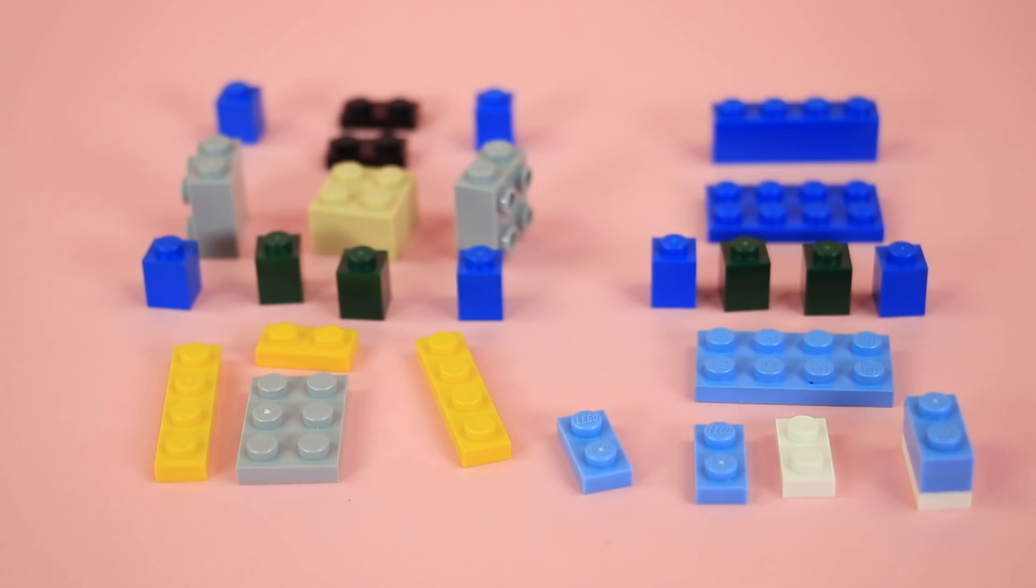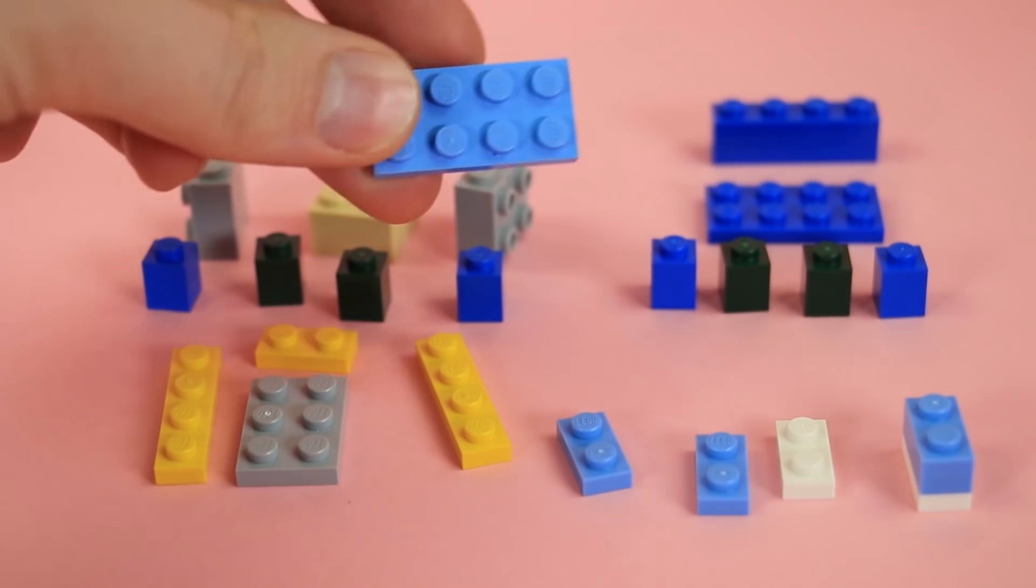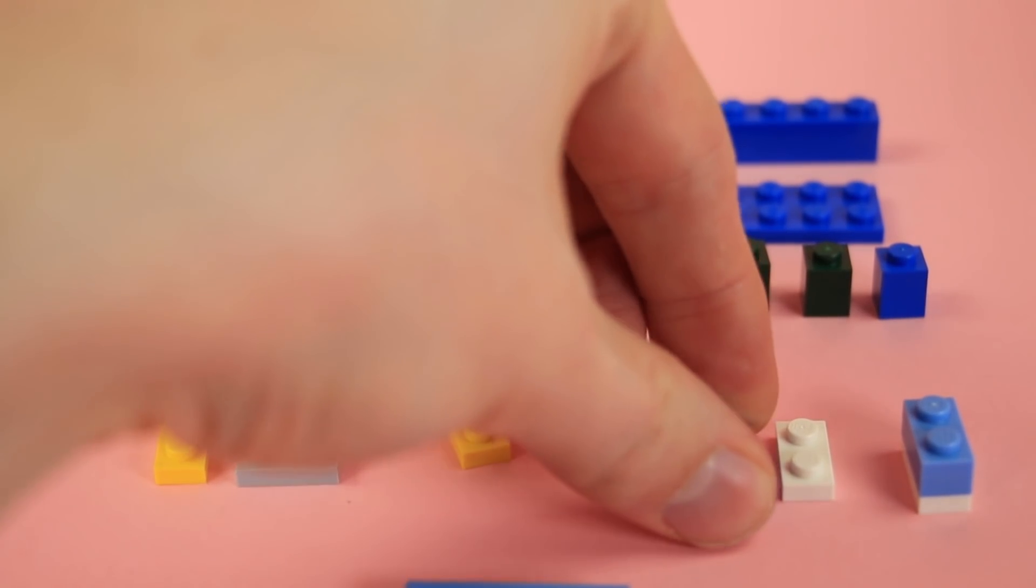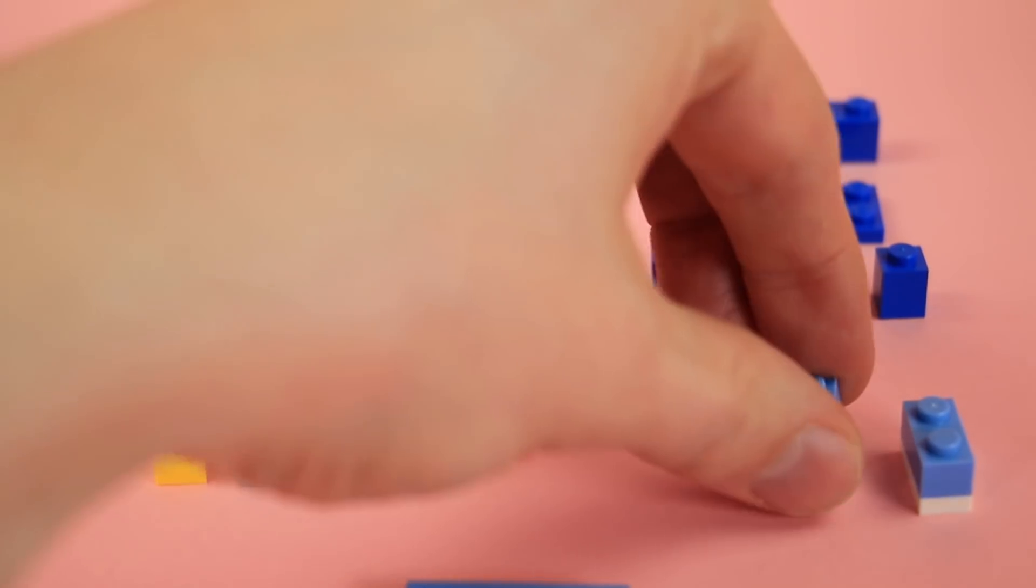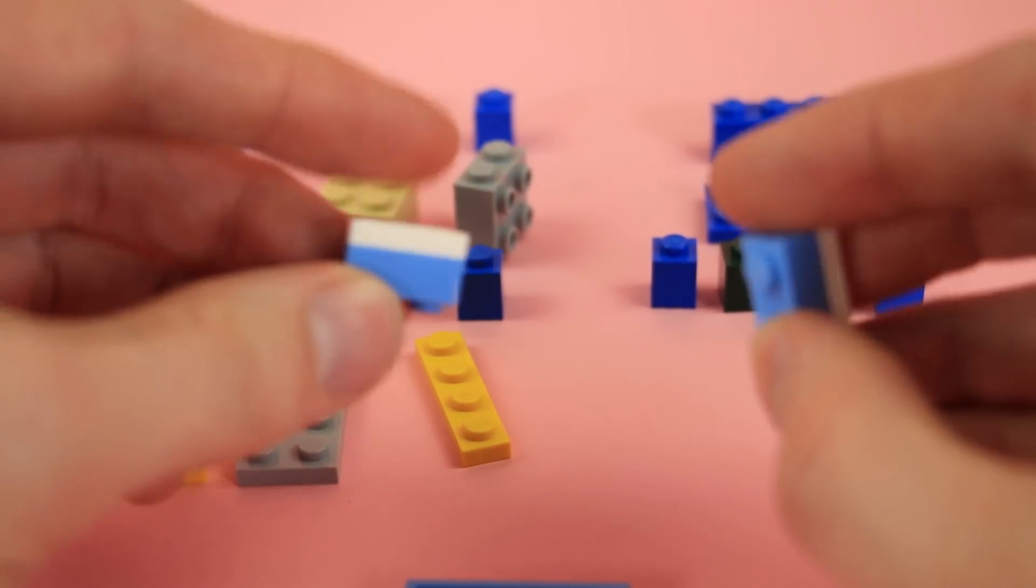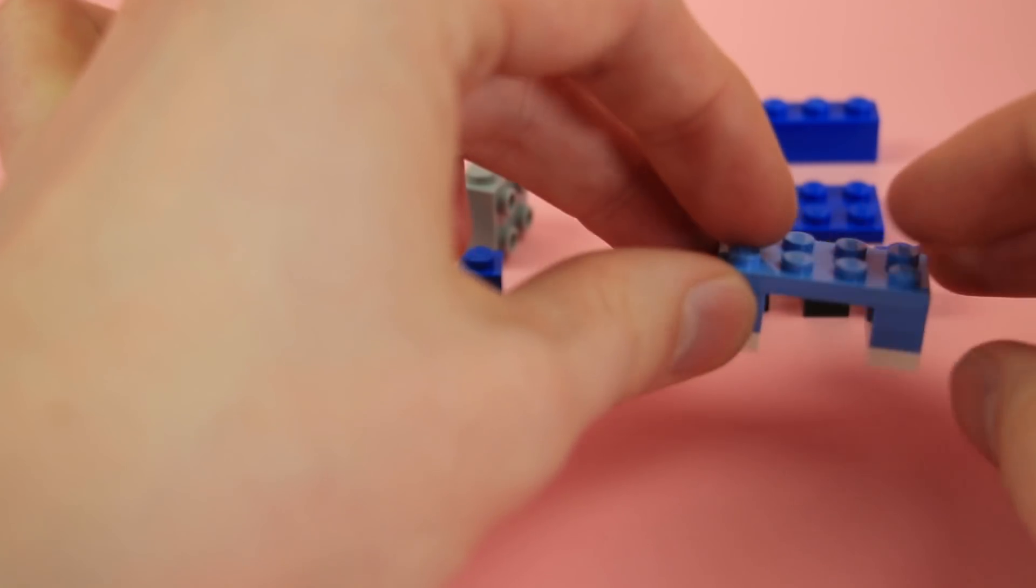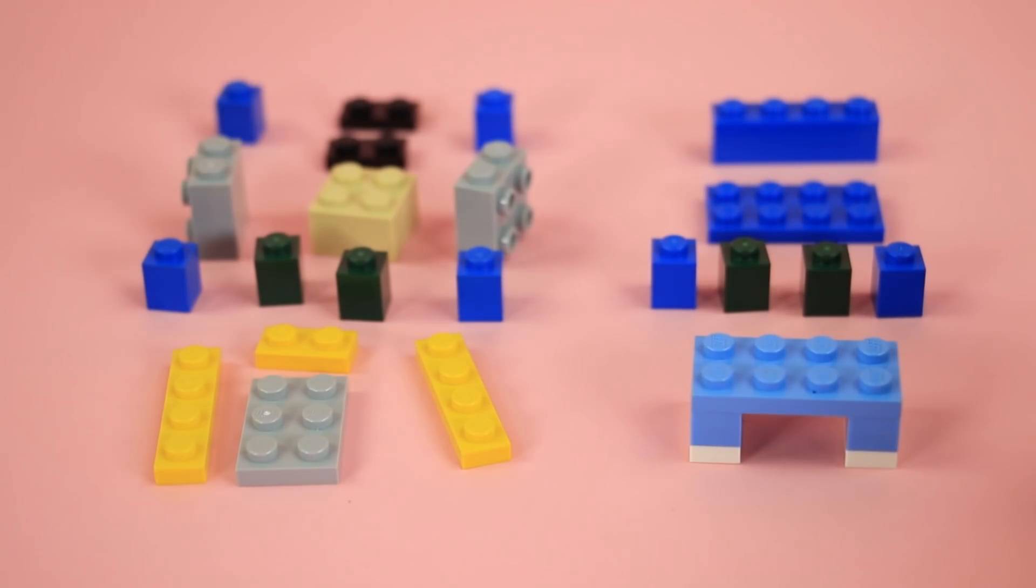To start out we're gonna build his legs. Get some medium blue pieces, 2x4 plate and then some 1x2s and a 1x2 in white. Make two little legs like that. Stick them there. Now we've got some little jean pants.